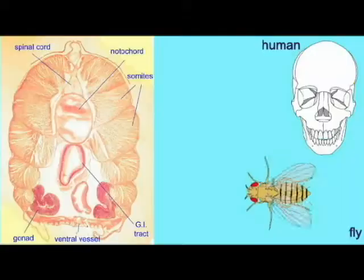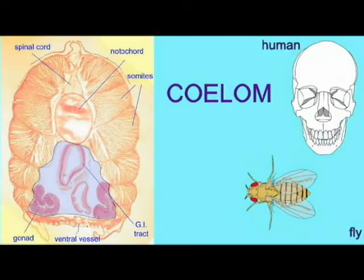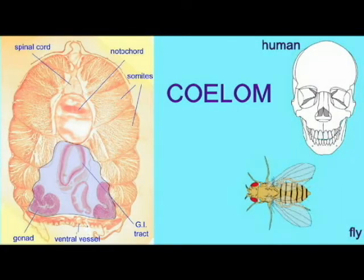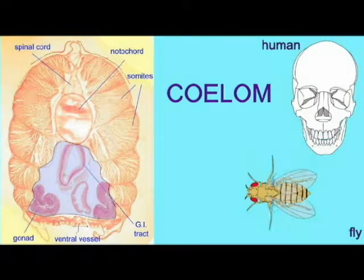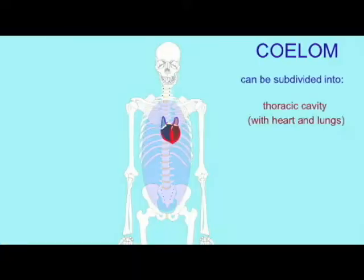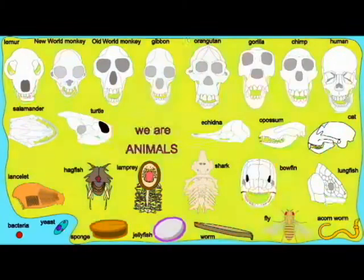Animals can be classified into a number of groups, such as animals, metazoans, bilaterians, coelamates, chordates, etc.